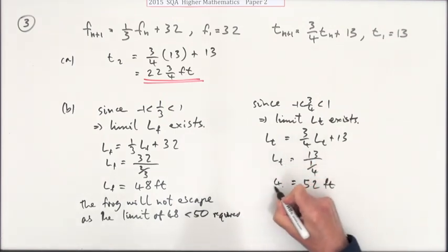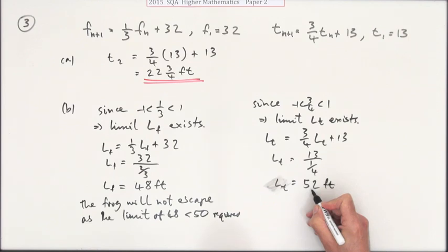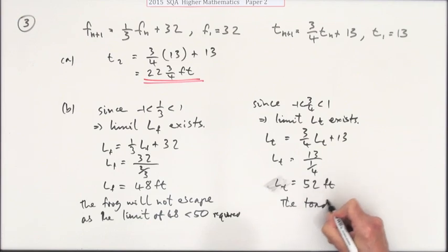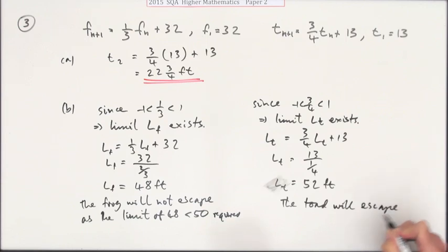So the toad, 52 feet, is more than the 50 feet of the well. So the toad does escape. The toad will escape eventually as the limit of 52 is greater than the 50 required.